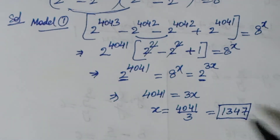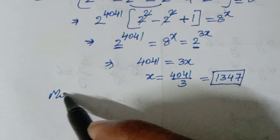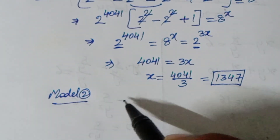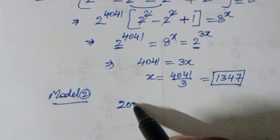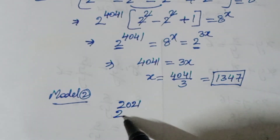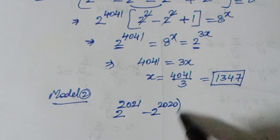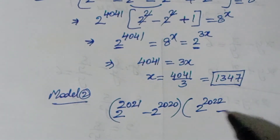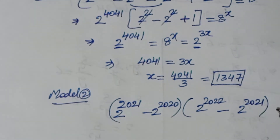That is the answer for the first method. The same problem can also be solved in a second way. Rewriting the question: 2 to the power of 2021 minus 2 to the power of 2020, multiplied by 2 to the power of 2020 minus 2 to the power of 2019, is equal to 8 to the power of x.